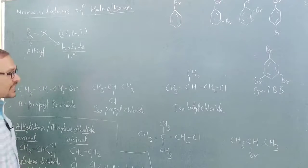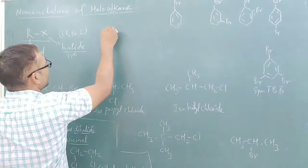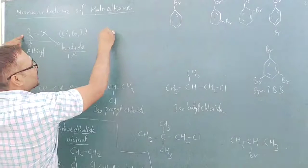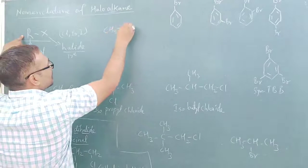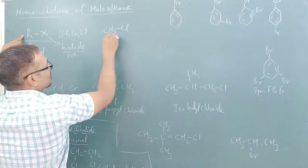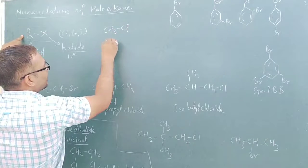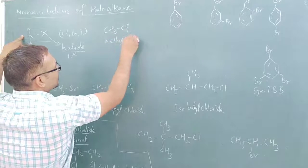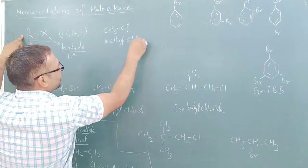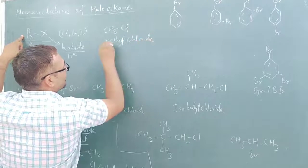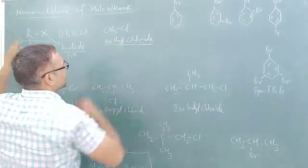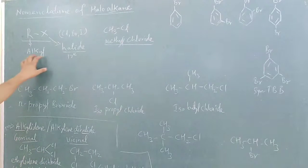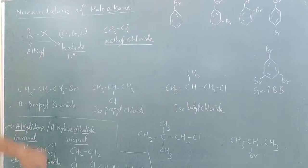Say for example, if we place one carbon in place of alkyl, we get CH3-Cl. So this will be methyl chloride — methyl is the alkyl part, chloride is the halogen part. This is the common name — common name is alkyl halide.